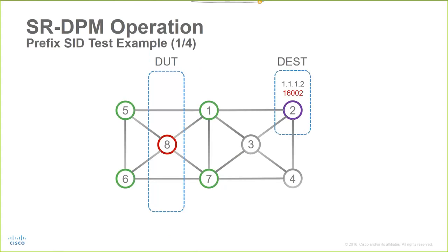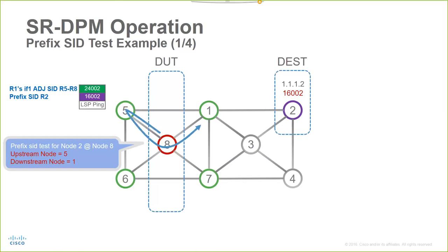Let's consider the example router 2 as a destination prefix that needs to be validated. As explained earlier, router 8 will send the test traffic to the upstream neighbor, for example, router number 5 and router number 6, and validate a set of downstream paths, for example, router number 1 or towards router number 7.